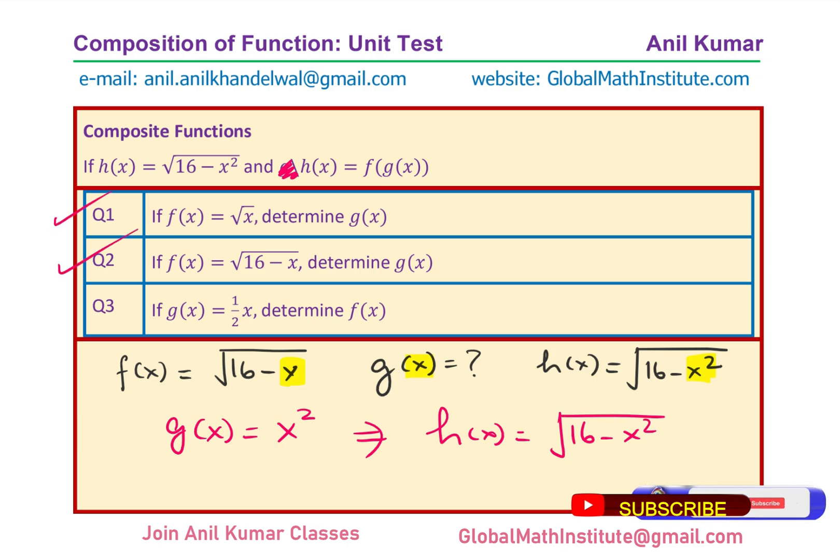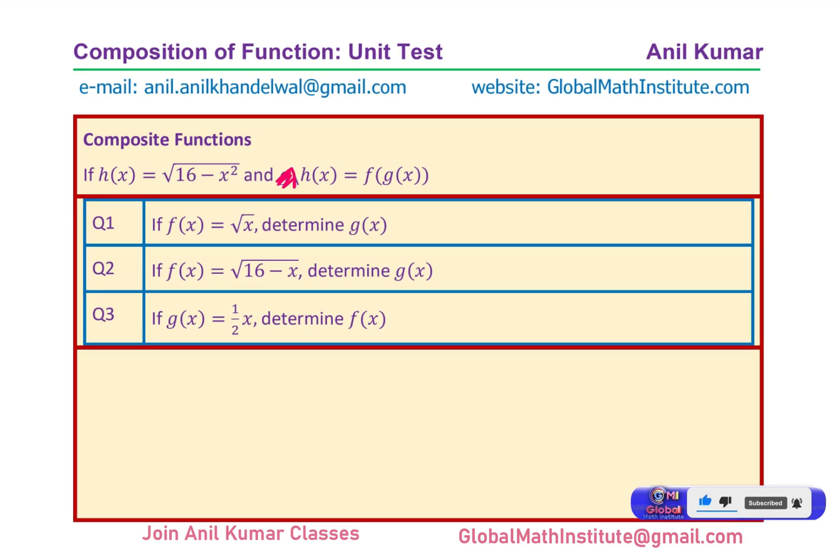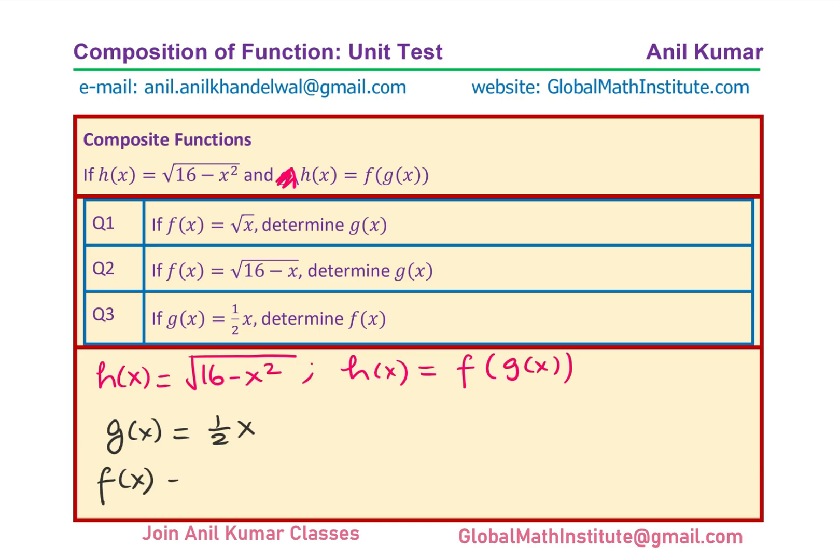These are the two parts which most students got correct. You must have also got it and it's not that difficult. However, question number three is kind of difficult. Now, in question number three, we have h(x) as equal to square root of 16 minus x square and we also know that h(x) is equal to f(g(x)). But this time, what we are given? We are given the inside function. We are given that g(x) is half x and we need to find what is f(x). How do you figure that out?